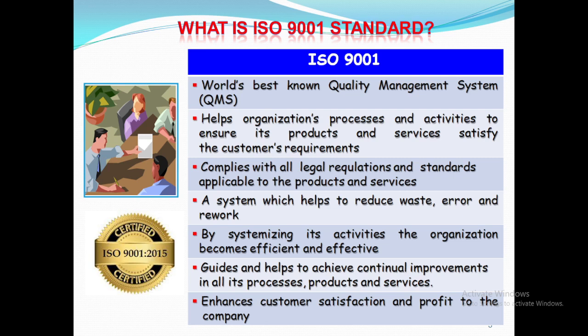ISO 9001 is the world's best quality management system. It helps organizations, processes and activities to ensure its products and services satisfy the customers' requirements. It complies with all legal requirements and standards applicable to the products and services. It is a system which helps to reduce waste, error and rework. By systemizing its activities, the organization becomes efficient and effective. It guides and helps to achieve continual improvements in all its processes, products and services, and enhances customer satisfaction and does profit to the company.